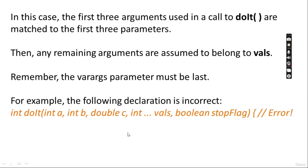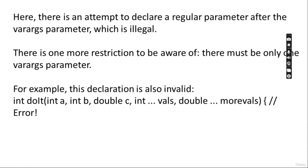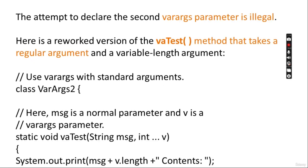Remember that the varargs parameter must be last. If you place variable-number parameters in between other parameters, it will give you an error — there is an attempt to declare a regular parameter after the varargs parameter, which is illegal. There is one more restriction: there must be only one varargs parameter — there cannot be more than one. For example, declaring two varargs parameters like 'int... b, double... c' will give you an error.